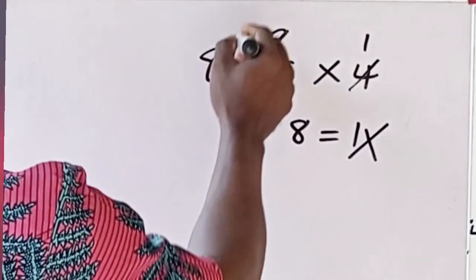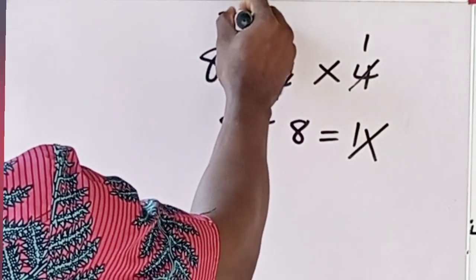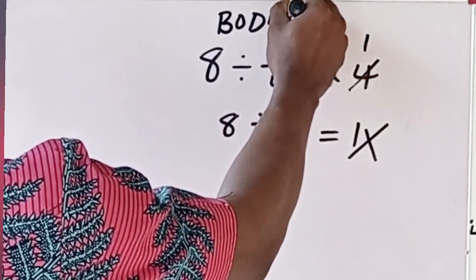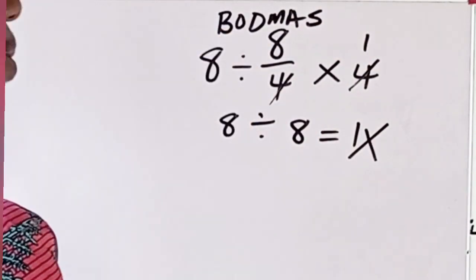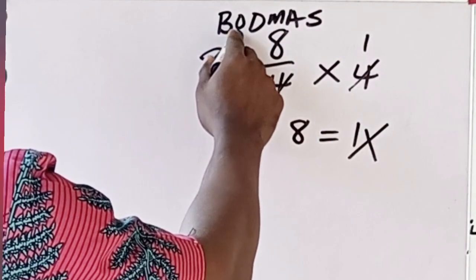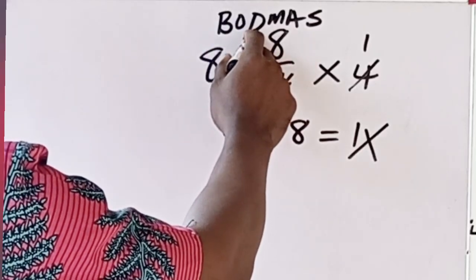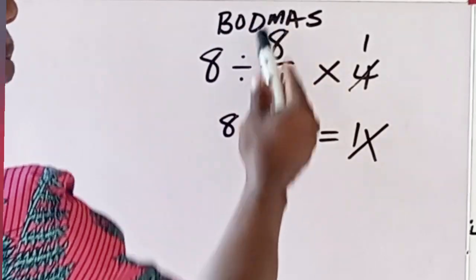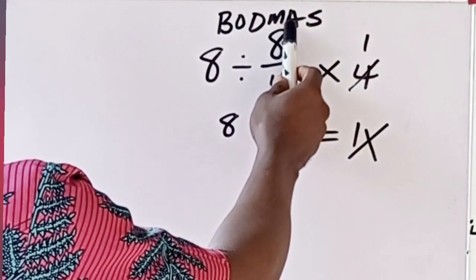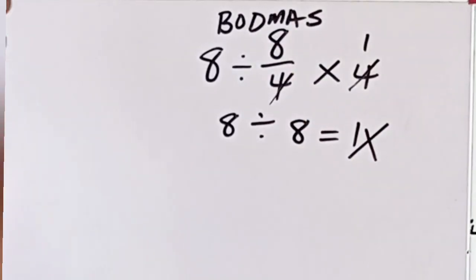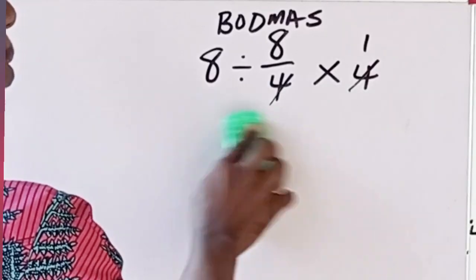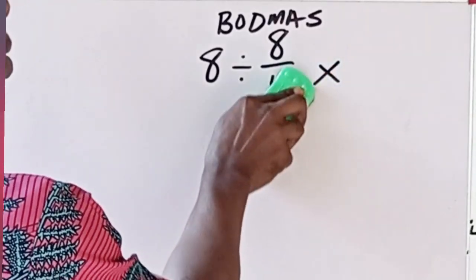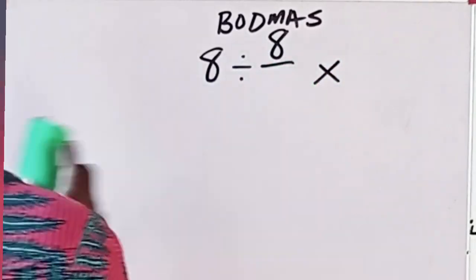The order of operation rule says BODMAS. This B stands for bracket, this O stands for of, D stands for division, M means multiplication, A means addition, and S means subtraction. Now in this order of operation, there are rules you apply when solving equations like this.